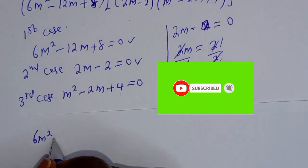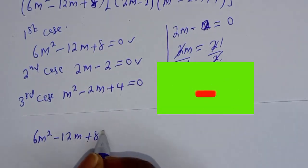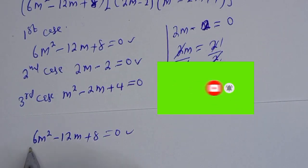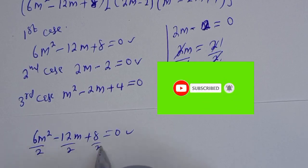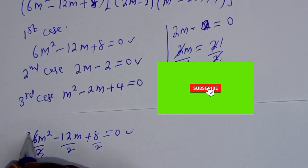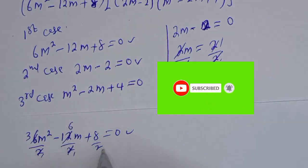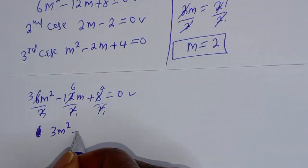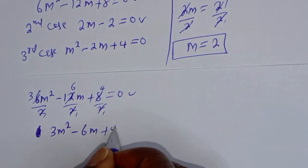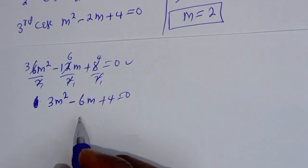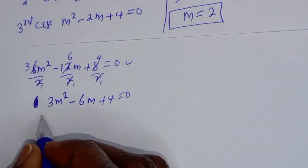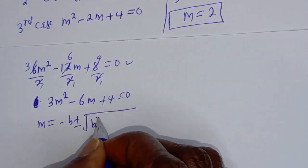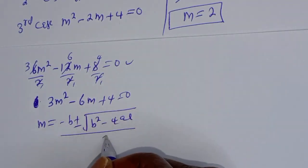For the first case, 6m squared minus 12m plus 8 equals 0. This is a quadratic equation. Dividing everything by 2 gives 3m squared minus 6m plus 4 equals 0. Using the quadratic general formula: m equals negative b plus or minus square root of b squared minus 4ac, all over 2a. Here a equals 3, b equals negative 6, c equals 4.